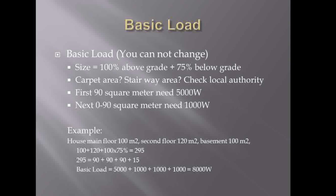Once you have the size of your property, according to the Canadian Electrical Code, you need 5,000 watts for the first 90 square meters of basic load, then an additional 1,000 watts per 90 square meters after that. For example, if your main floor is 100 m², second floor is 120 m², and basement is 100 m², the total area is 100 + 120 + 75% of 100 = 295 m². Breaking that down: 295 = 90 + 90 + 90 + 15. The first 90 needs 5,000W, the next two 90s need 1,000W each, and even the last 15 m² needs another 1,000W, giving you a total of 8,000 watts.